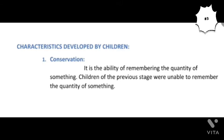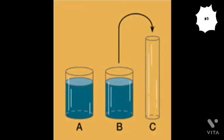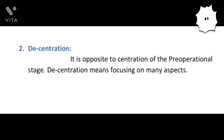The first characteristic developed in this stage is conservation. Conservation refers to the ability to remember the quantity of something. In the previous pre-operational stage, children lacked this ability. For instance, if you show children three glasses with the same quantity of water and ask which has more, children in the previous stage would say the third glass has more water. But in this stage, they will correctly tell you that all the glasses contain the same amount of water.